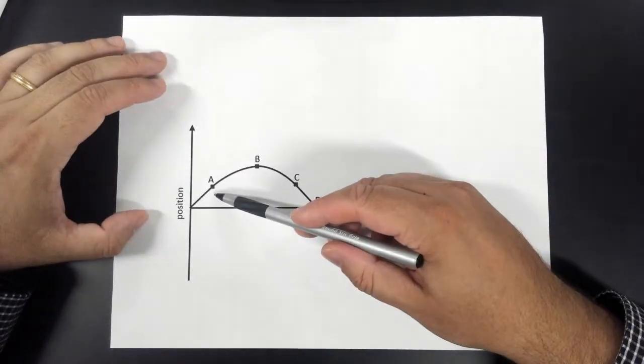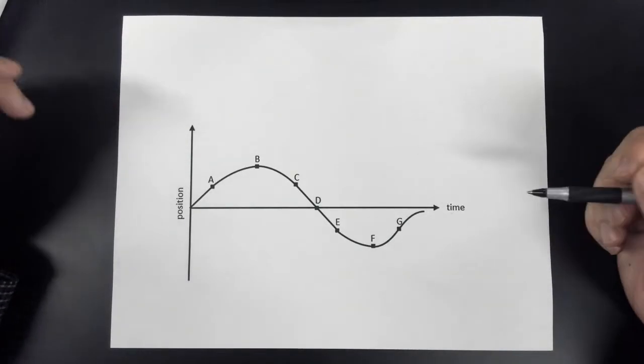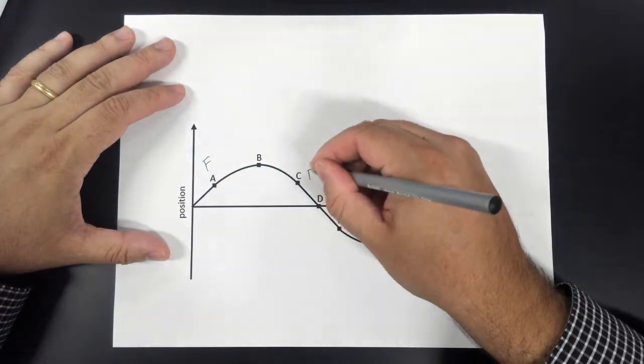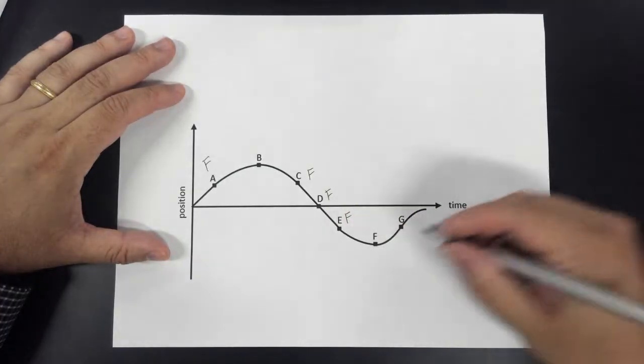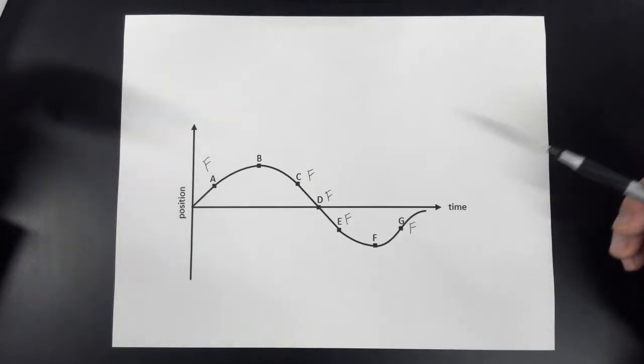So in real life, that's where this object's moving the fastest. I'll put F for fast. It's going fast right there, fast, fast. It's still going fast right here, and then it's going fast again here, because the line's steep.